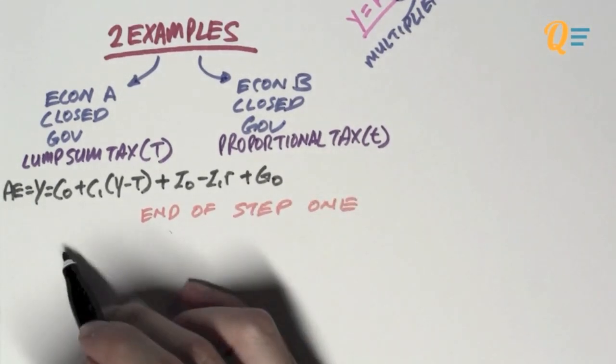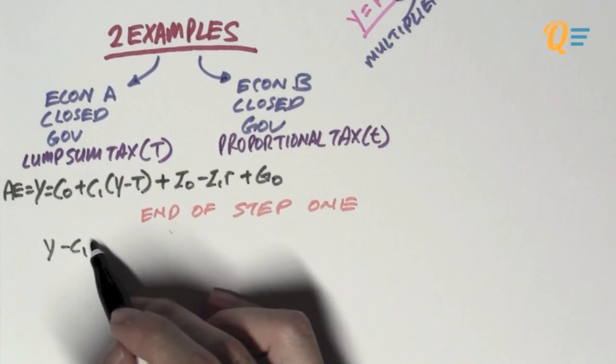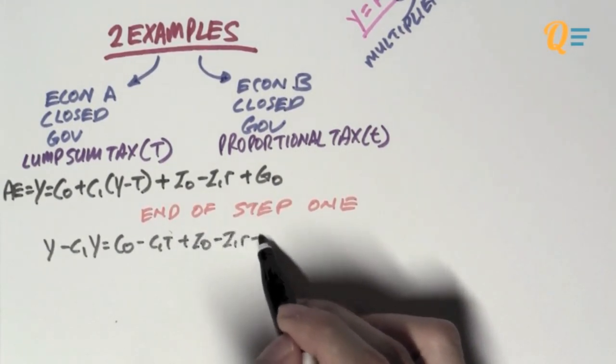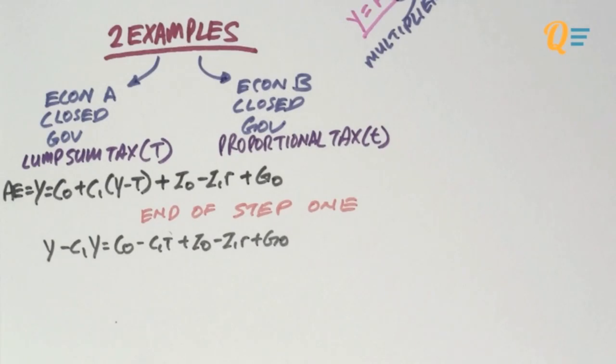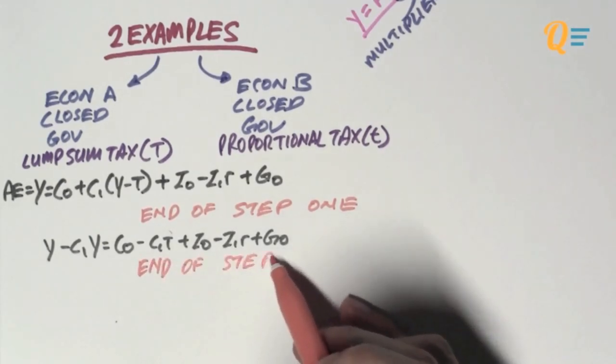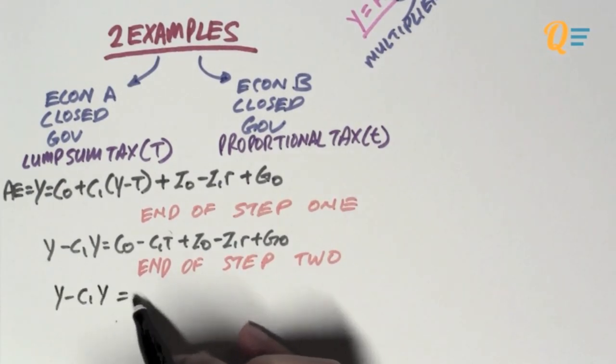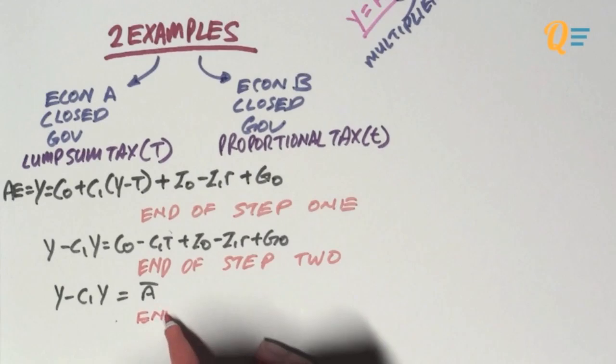So, step number two is to bring all the Y items onto the left-hand side of this equation. So, if I expand that bracket of C1 multiplied by Y minus T, I notice that C1Y has got Y in it, right? So, I'm going to bring that to the left-hand side and that's the end of step two. There's only one Y item in this equation.